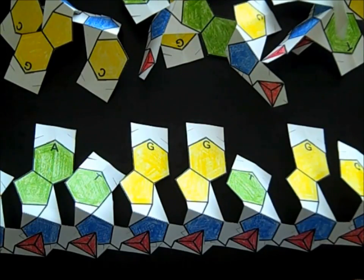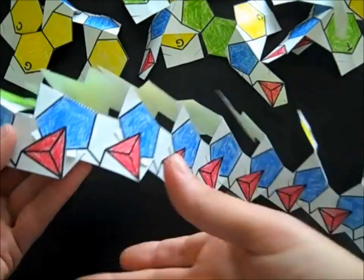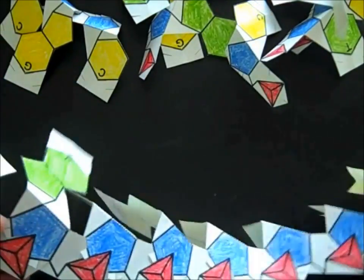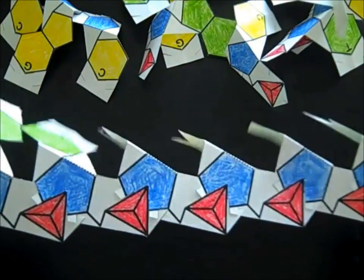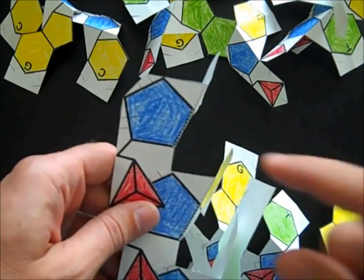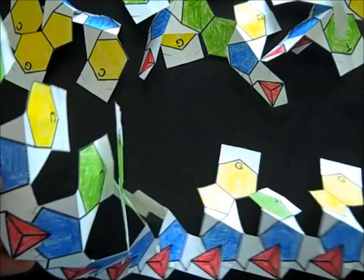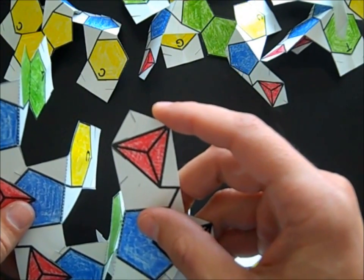All right, now I have a complete single strand of DNA and some additional loose nucleotides here. And one of the things that I notice right away about this strand is that at one end I have an unbonded sugar molecule, and at the other end I have an unbonded phosphate group.